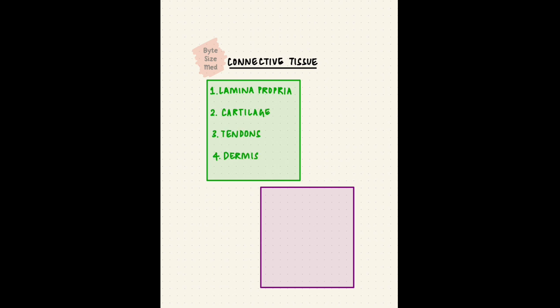There are different types of connective tissue. Your task is simple. Matching example with the type of tissue that it has. The lamina propria of the gastrointestinal tract, cartilage, tendons, and the dermis. Are they dense regular, dense irregular, loose, or specialized connective tissue? You can pause the video here and take as much time as you need. But I just get one minute, so time's up.